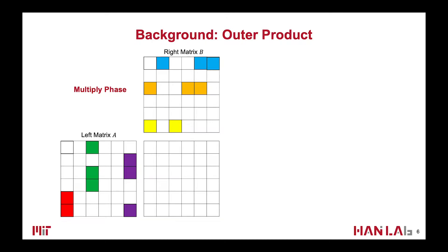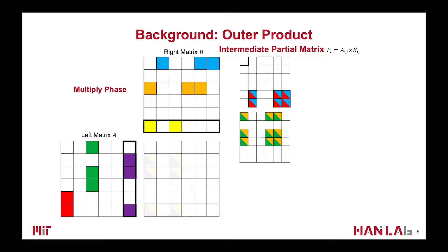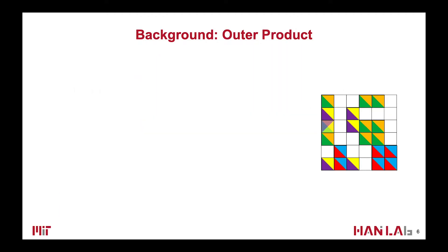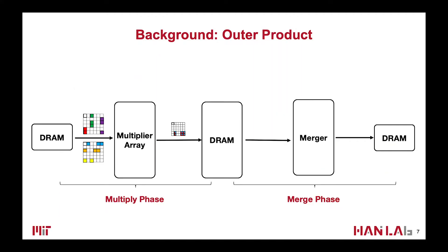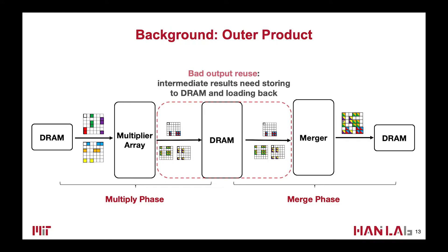We do outer-product between the first column of the left matrix and the first row of the right matrix to get the first partial matrix, and repeat that to get three partial matrices. In the second merge phase, these partial matrices will undergo element-wise addition to be merged into one final matrix. This method has perfect input matrix reuse because each column and row only needs to be fetched once. But for partial matrices, we need to store them to DRAM and then load back later to do the merge, which incurs a large number of DRAM accesses. Therefore, the output reuse of the outer-product-based method is not that good.